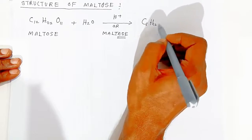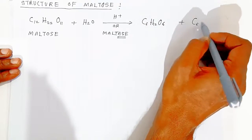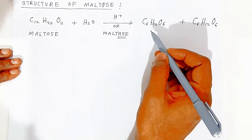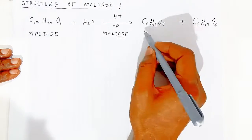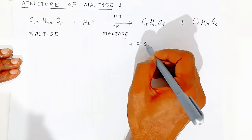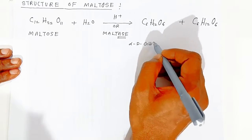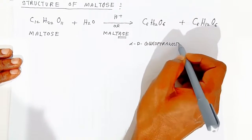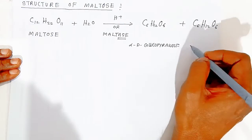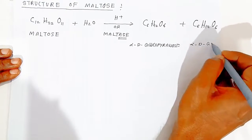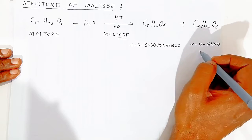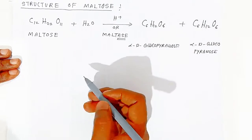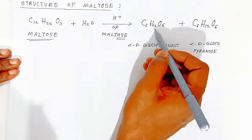Maltose produces two monosaccharides, both with formula C₆H₁₂O₆. Both monosaccharides are alpha-D-glucopyranose — that is, maltose is made of two alpha-D-glucose units.